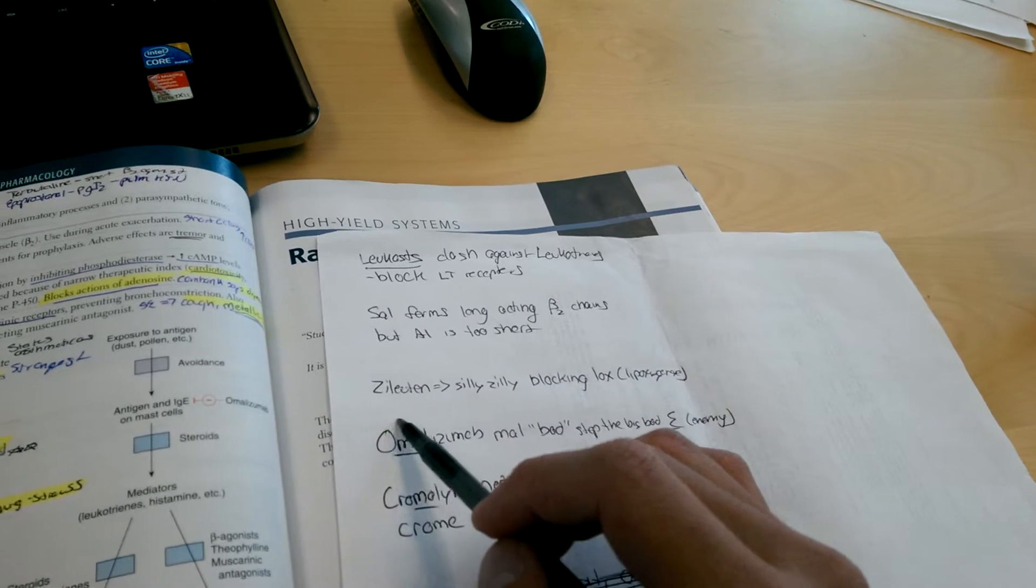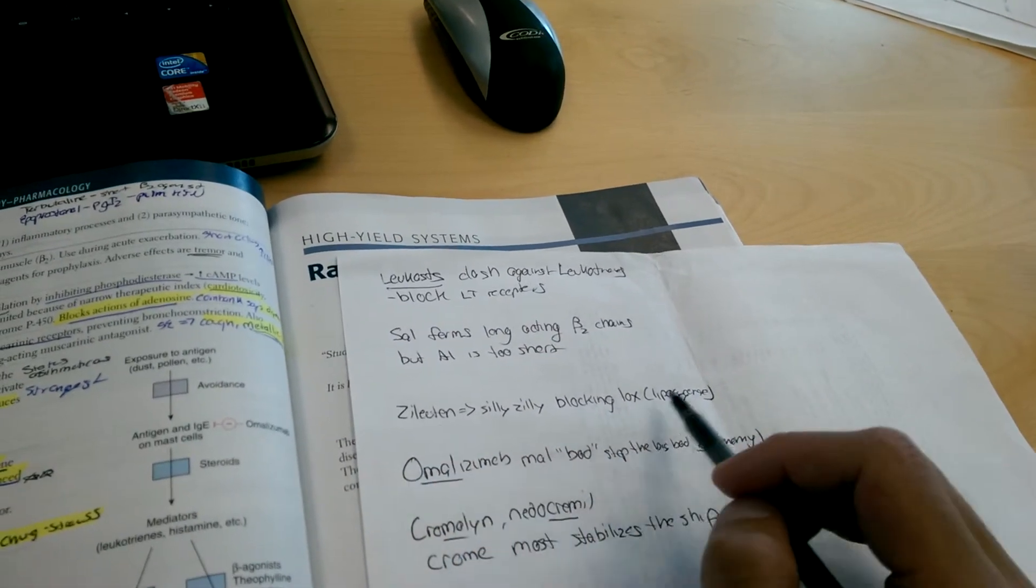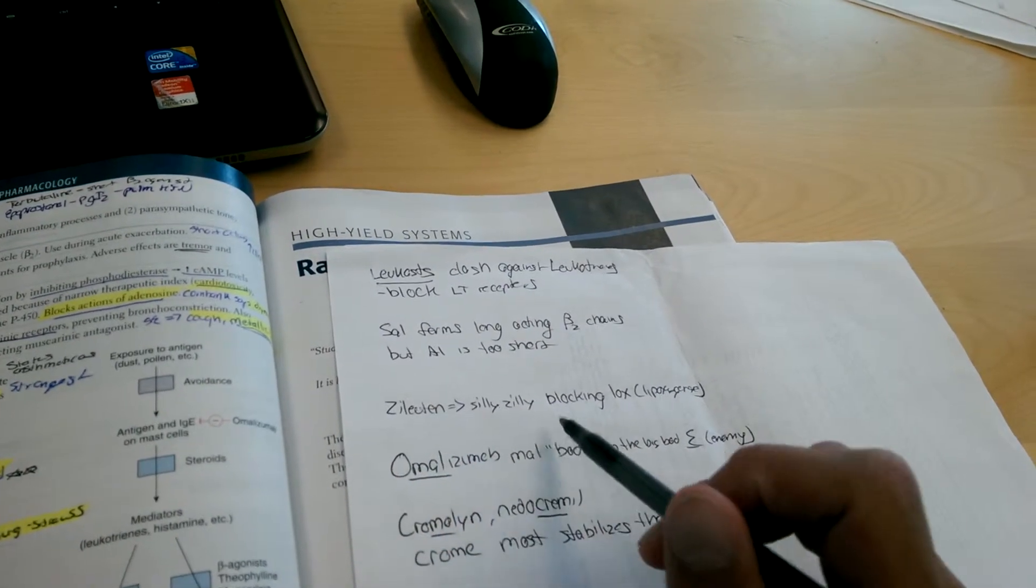Zileuton, silly silly blocking locks. Zileuton blocks lipoxygenase, so again, silly silly blocking locks.